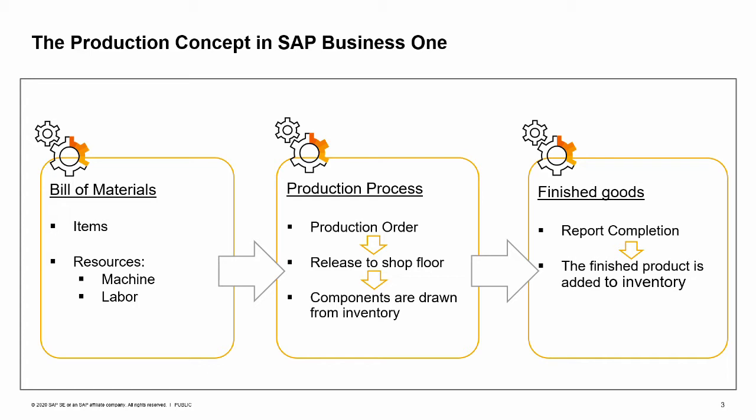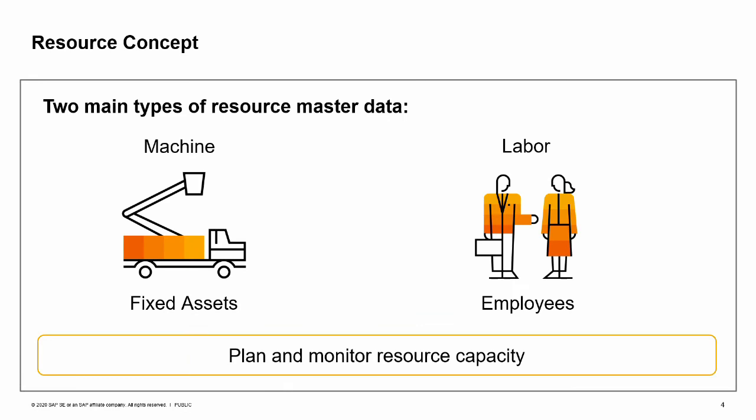Note that this is the main production process concept in SAP Business One, but not the only one. The resource is defined as master data in the system. There are two main types of resources: machine type, a resource linked to a fixed asset taken from the fixed asset's master data list; and labor type, a resource linked to an employee taken from the employee's master data list.